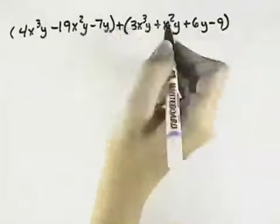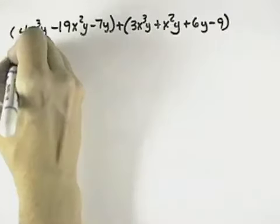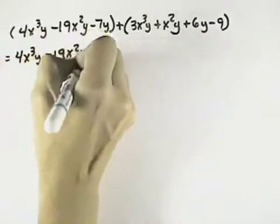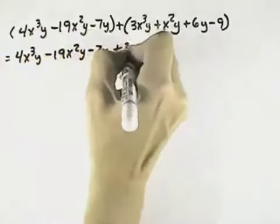Since it's addition, there's nothing in front of either of the polynomials, so we can remove our parentheses and just write the terms out. We can remove both the parentheses.